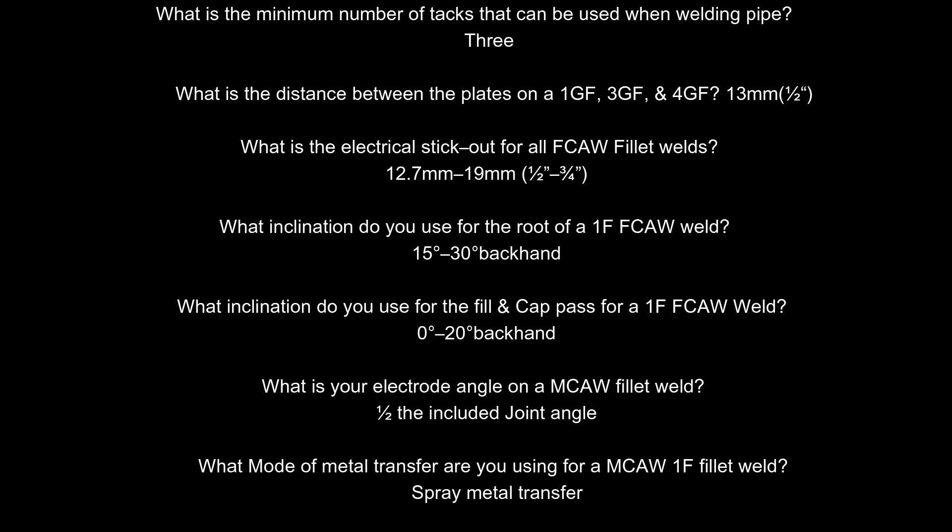What is the distance between the plates on a 1GF, 3GF, and 4GF? 13 mm, one-half inch. What is the electrical stickout for all FCAW fillet welds? 12.7 mm to 19 mm, one-half to three-quarters inch.